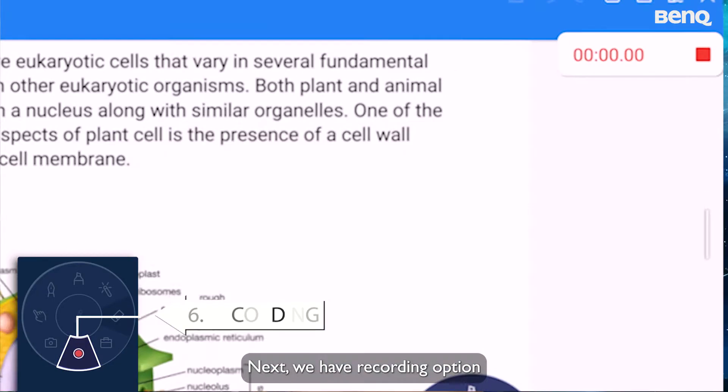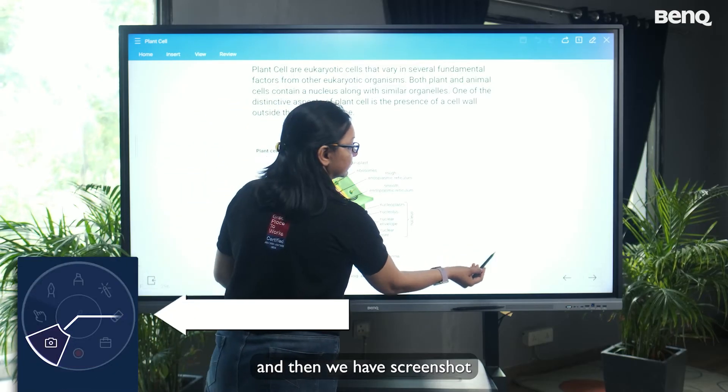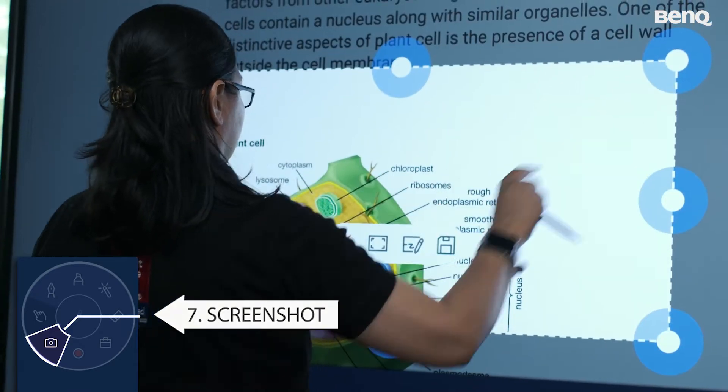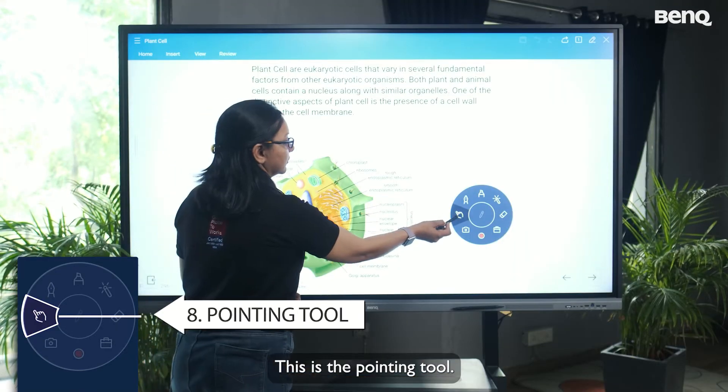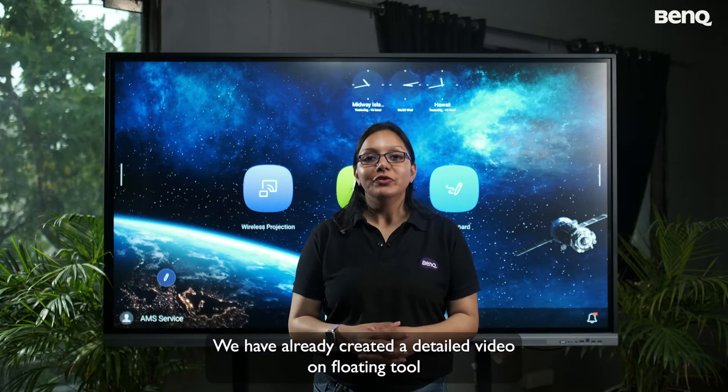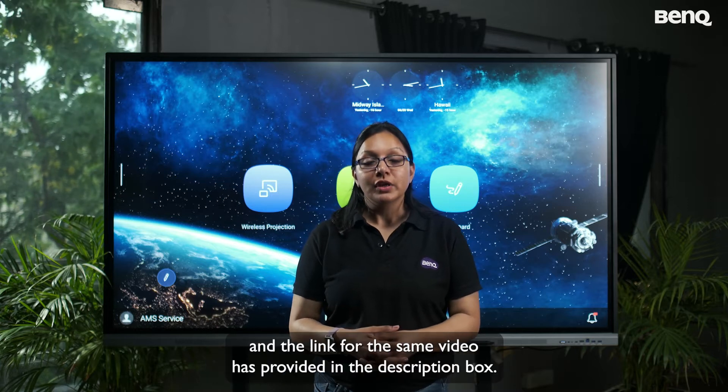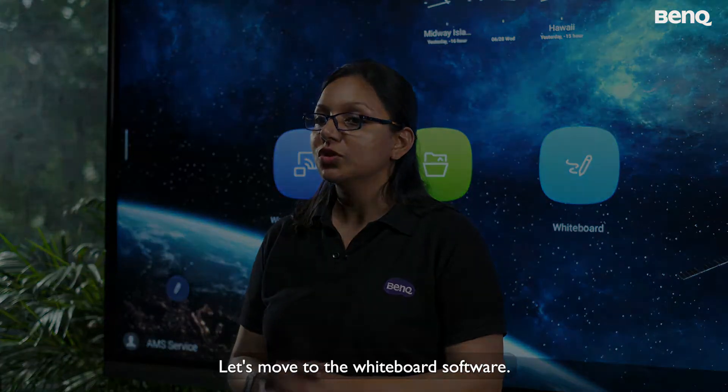Next, we have recording option. And then we have screenshot. At the end, this is the pointing tool. We have already created a detailed video on floating tool and the link for the same video has provided in the description box. Let's move to the whiteboard software.